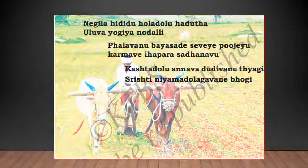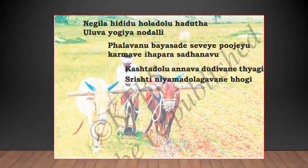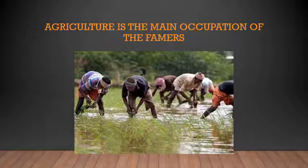In your textbook, they have asked you to read the famous poem written by Rashtra Kavi Kuempu. In this poem, words like 'Uluva yogi,' 'annava,' 'dudivarat,' and 'aige' have been used. Can you guess who he is? Write your answer in the box given on page 94. The answer you have to write is 'farmer' — F-A-R-M-E-R.